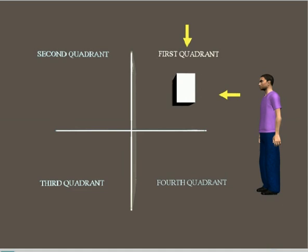In this quadrant, the object is placed above the horizontal plane and in front of the vertical plane with respect to the observer.